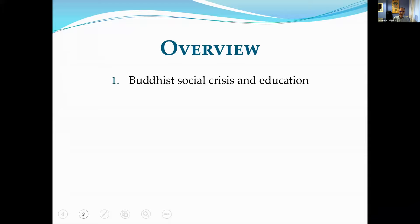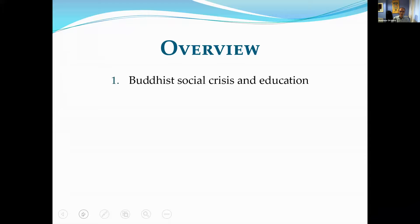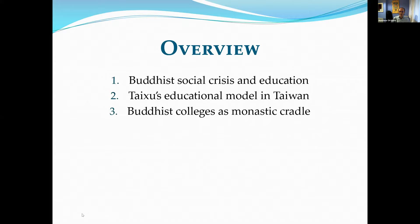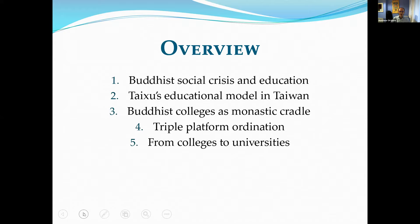Just a brief overview: we're going to talk a little bit about the Buddhist social crisis and education a century ago, Tai Xu's educational model from the mainland and how it was brought to Taiwan in the middle of last century, how Buddhist colleges have become the monastic cradle, a brief detour into triple platform ordination which is often part of the monastic training and the college experience, the more recent shift from colleges to universities, and then very briefly about what happens after graduation.